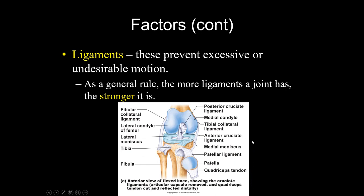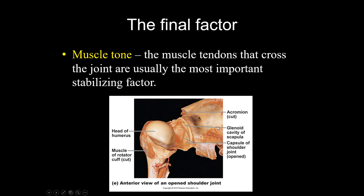The more ligaments a joint has the more stable it's going to be, but the less flexible it will be. Your body has to decide: do we want this joint to be stable (dislocates less often) or flexible (wider range of motion)? You sacrifice one for the other. Muscle tone also matters — because muscles span joints to move bones, they maintain tension and help keep things in place. The main thing helping the shoulder joint, which has poor articular surfaces and few ligaments, is the rotator cuff muscles, which wrap around the head of the humerus to hold it against the glenoid cavity of the scapula.